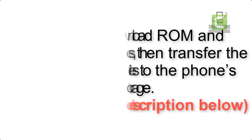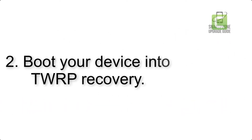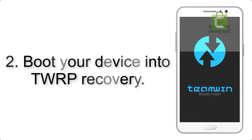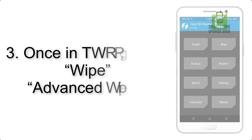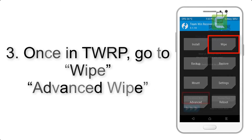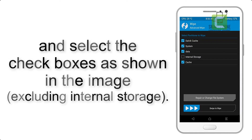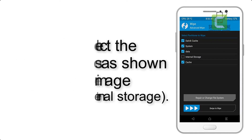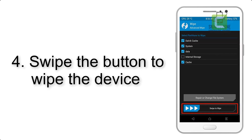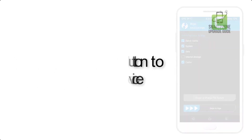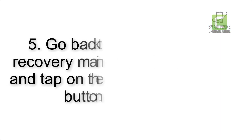Step 2: Boot your device into TWRP recovery. Once in TWRP, click on Wipe, then Advanced Wipe, and select the checkboxes as shown in the image, excluding internal storage. Step 4: Swipe the button to wipe the device.